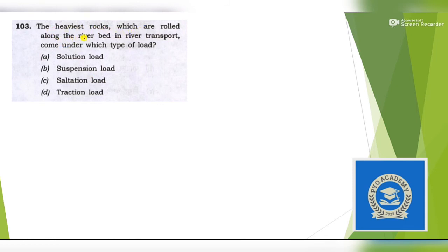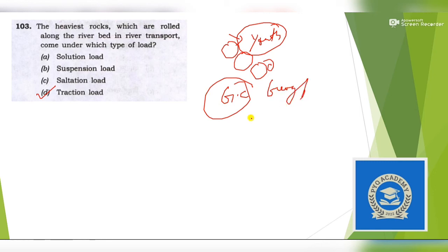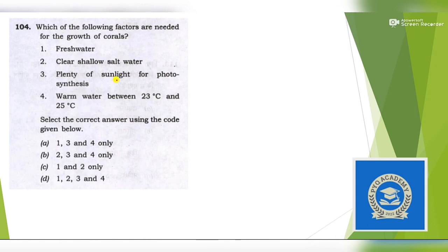Next question: The heaviest rocks which are rolled along the river bed in river transport comes under which type of load? Heavy load comes under traction. These are large stones which are rolled in the youth stage of river. You can find this in the chapter of Geography. Next question: Which of the following factors are needed for growth of corals? You need to know whether it is found in fresh water or salt water. Have you ever seen corals in rivers? No. Not in fresh water, but in clear shallow water. If you eliminate option one, you'll get option B as answer. They are found in warm water and they need sunlight for their photosynthesis process.